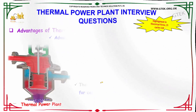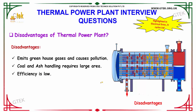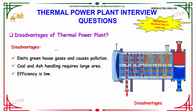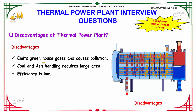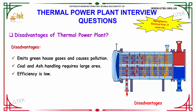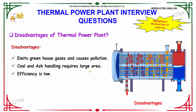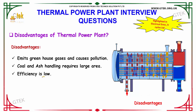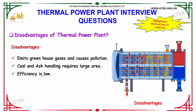What are the disadvantages of a thermal power plant? It emits greenhouse gases and causes pollution. Coal and ash handling requires a large area. The efficiency is also very low.